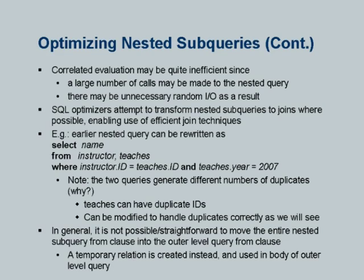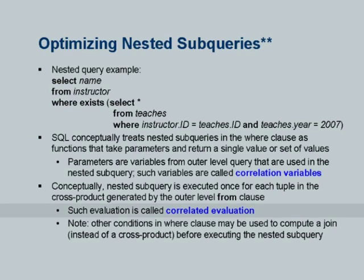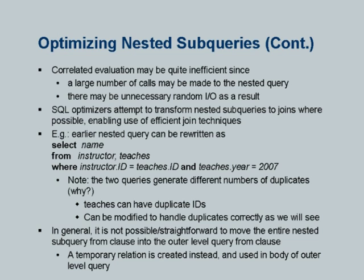Why do we have to be careful? Here is the earlier query turned into a join: SELECT name FROM instructor, teachers WHERE instructor.id equal to teachers.id AND teachers.year equal to 2000. The issue is duplicates. In the original query, each instructor's name is output once. Here, if an instructor is teaching two courses, that instructor's name will appear twice. So we have to deal with this — there are ways to deal with it. A good optimizer will take nested subqueries and do what is called decorrelation. This default evaluation is called correlated evaluation. Decorrelation takes a nested subquery and turns it into a join or a sequence of joins. Here it was easy; in other cases it may be more difficult. All optimizers do some amount of decorrelation.